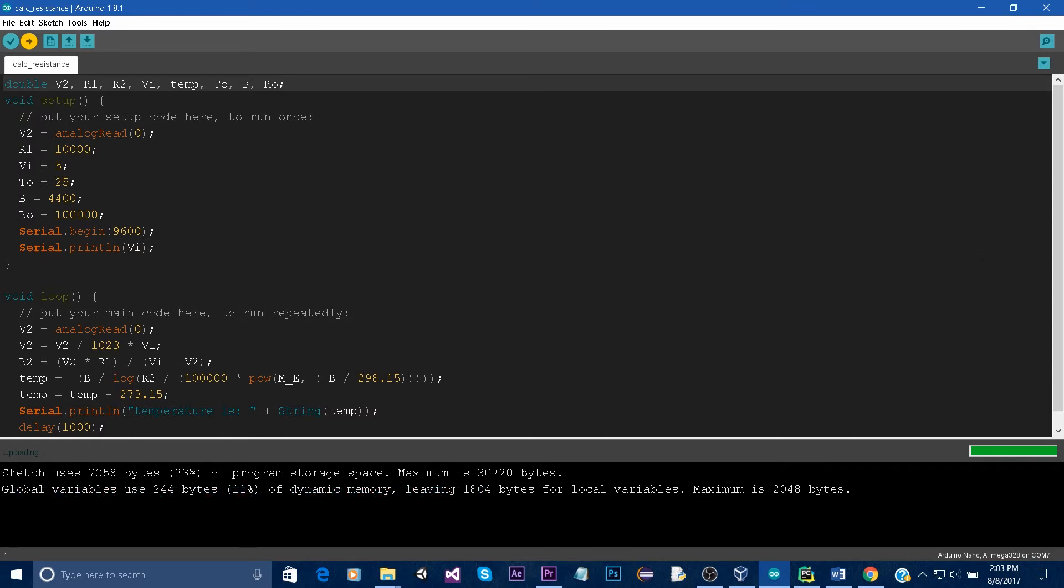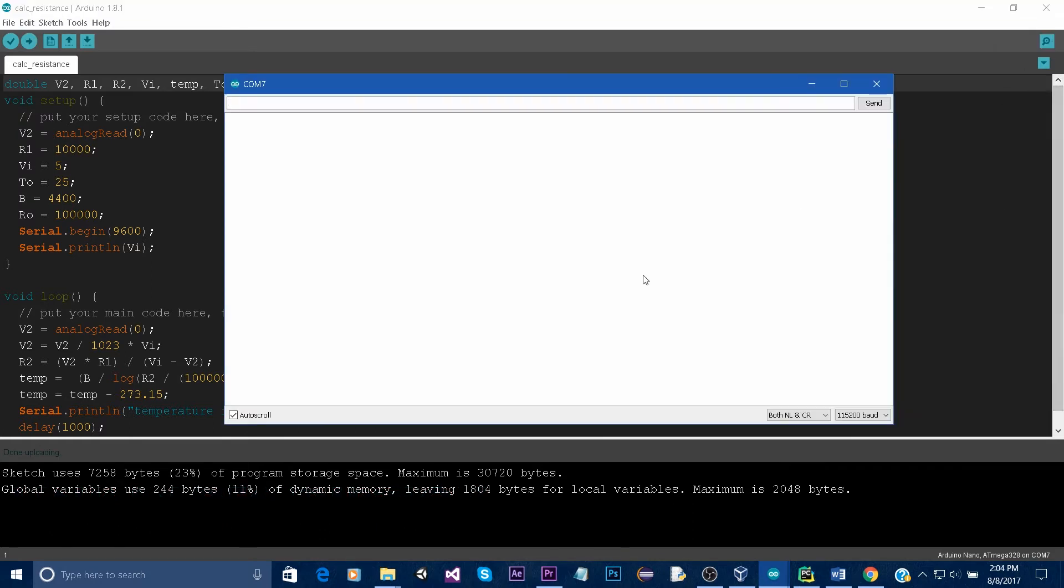Once you're done uploading the sketch to your Arduino, open the serial monitor and set the baud rate to 9600.